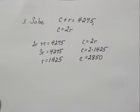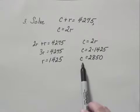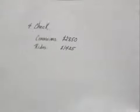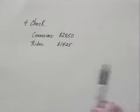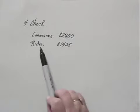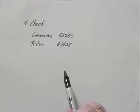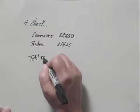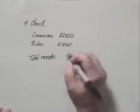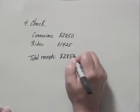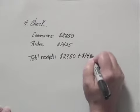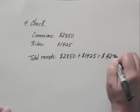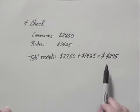Now we can look back at our familiarized step and recall that C stands for the amount of concessions and R for the receipts from the rides. So I'm checking: is the amount brought in from concessions $2,850, and from the rides $1,425? Let's first check total receipts. We add the two together: 2,850 plus 1,425 equals 4,275. That does correspond to what we were told in the problem.